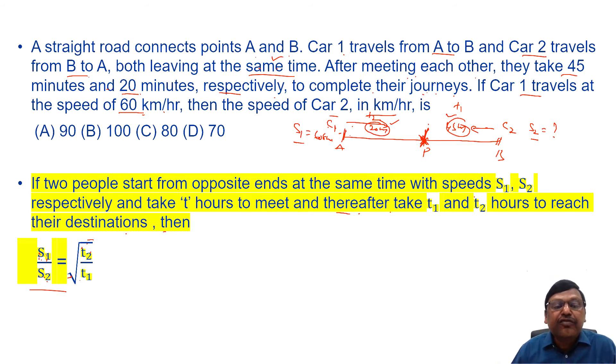So here, speed of first car we know is 60, speed of second car we have to find out equals to square root of time taken by them. So the first car is taking 45 minutes, second one is taking 20 minutes. But if you write S1 by S2, you should write T2 by T1. Since you are writing the speed of first car, you should start with T2 that is 20 by 45.